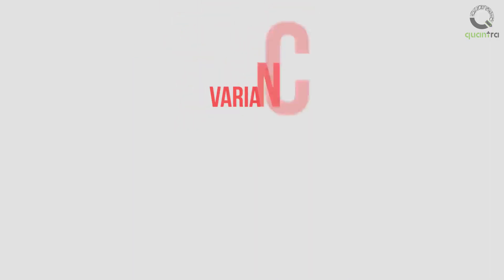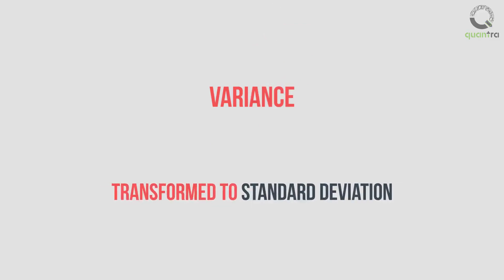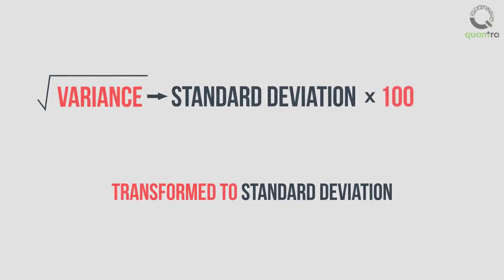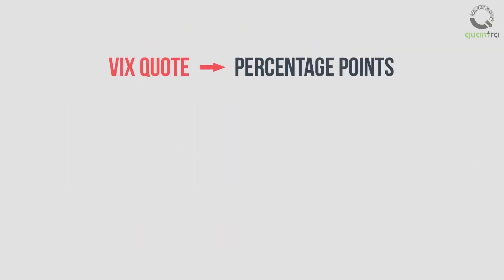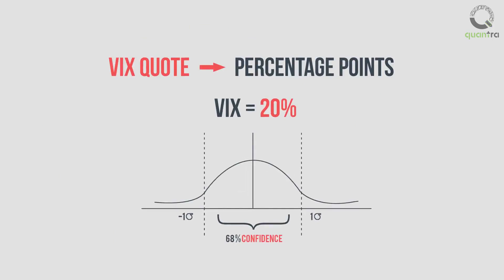This calculated variance is then transformed to standard deviation by taking its square root, and is multiplied by 100 to obtain the value of VIX. The VIX is quoted in percentage points — that is, a VIX of 20 represents an expected annualized change of 20% at a 68% confidence level, or within one standard deviation of the normal probability distribution.